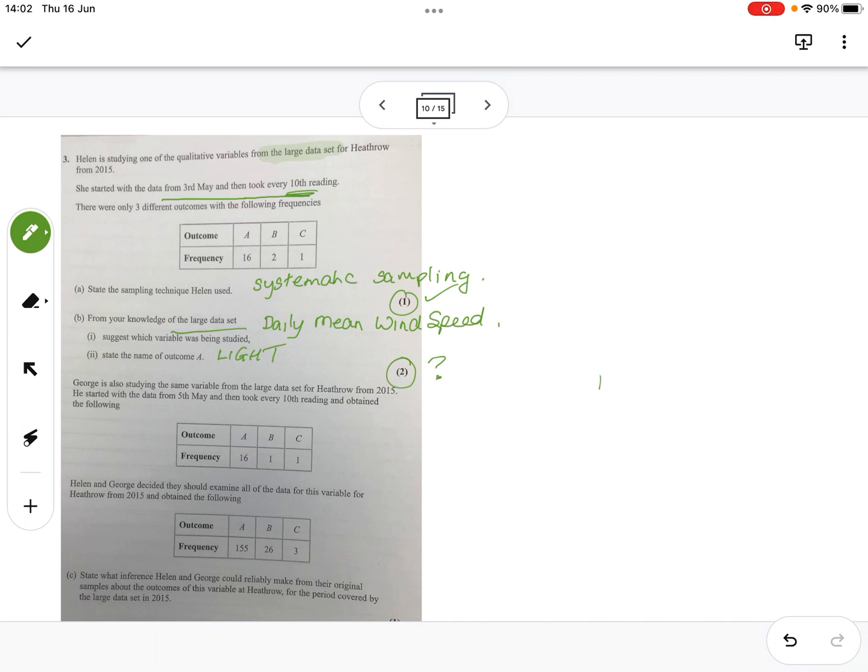Now this one we should be able to get. It's only one mark but it's worthwhile. This is your sample, this is the actual data. State what inference Helen and George could make from their original data. If you look at your original data, the probability of A is 16 out of 18.